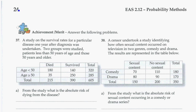All right, so this is page 24 in your workbook, just looking at an additional example for you for relative risk. Question number 37. A study on survival rates for a particular disease one year after diagnosis was undertaken. Two groups were studied, patients less than 50 years of age and those 50 years or older.